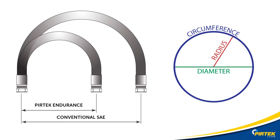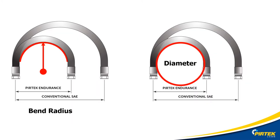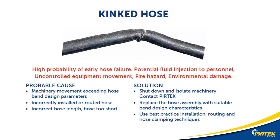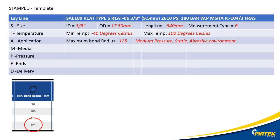The Pertec Endurance has a smaller minimum bend radius than the conventional SAE hose. Terminology can be confused — just remember a radius is the size of an arc, not to be confused with diameter which is double the radius. Exceeding the bend radius could cause kinked hose and hose failures. I'll proceed to enter the information for A — application — on my stamped template.